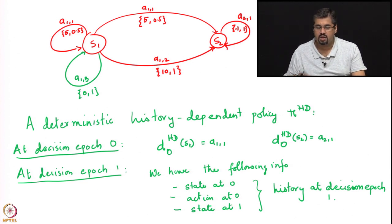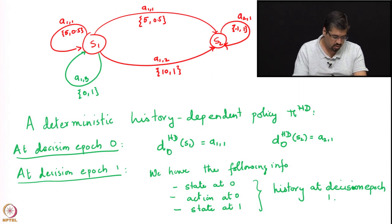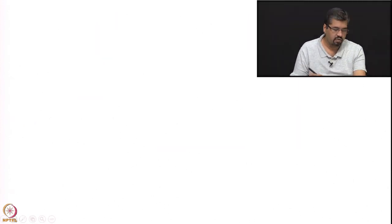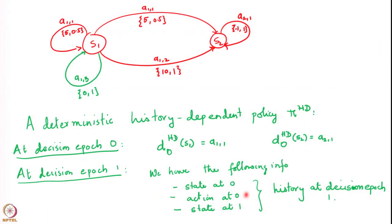Because the history at decision epoch 1 comprises those three variables, we will write out policies in a certain form. We will write out where we were at decision epoch 0 — those two components, the state and action at epoch 0 — and then the state at decision epoch 1 will be written separately.